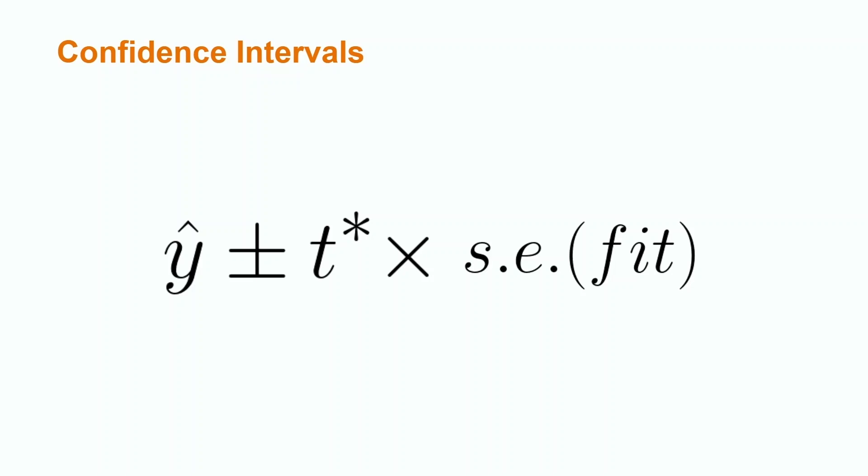What if Lucy wanted to find an interval for the mean salary of everyone with a 2 year degree versus everyone with a 4 year degree? This is when we would use a confidence interval. The formula for a confidence interval for the mean y at a specified x is y hat plus or minus t star times the standard error of y hat. However, we will use Minitab for this calculation as well.